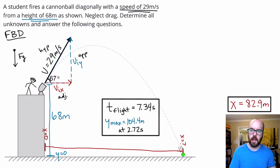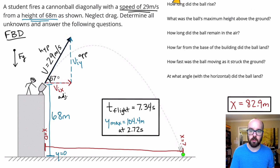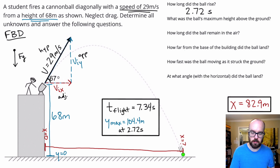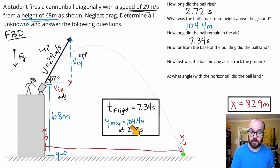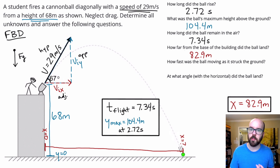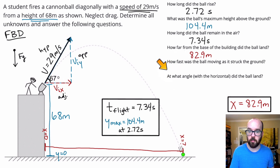Let's go back to our questions and answer them. How long did the ball rise? It was rising for 2.72 seconds. What was the ball's maximum height? It got to 104.4 meters. How long did the ball remain in the air? Our flight time was 7.34 seconds. How far from the base of the building did the ball land? That was 82.9 meters horizontally. Then we've got two more advanced questions: how fast was it moving when it struck the ground, and what angle did the ball land at?